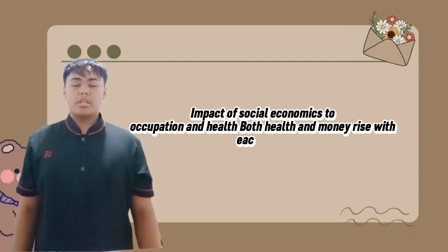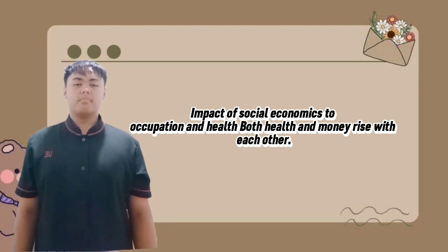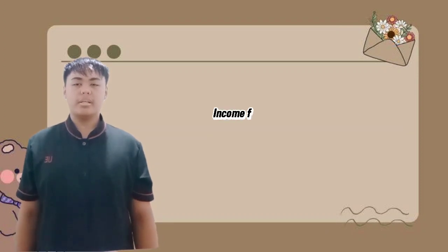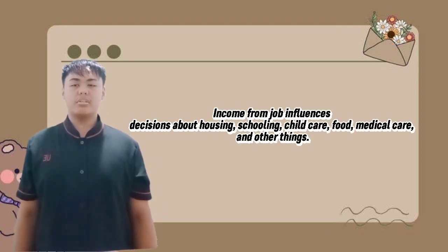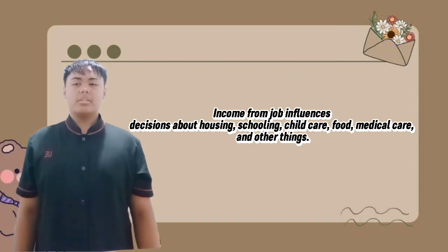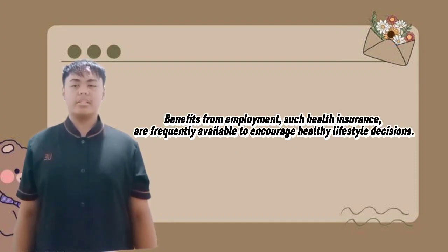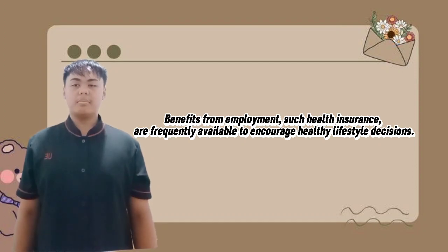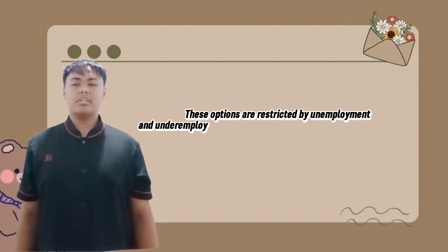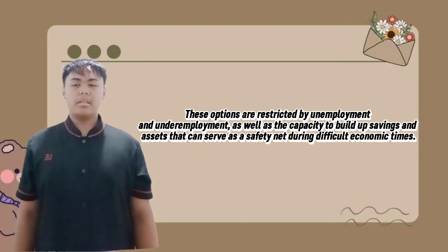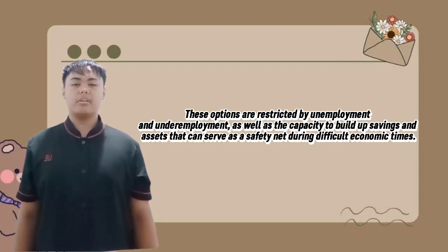The impact of social economics on occupation and health. Both health and money rise with each other. Income from a job influences decisions about housing, schooling, childcare, food, medical care, and other things that benefit from employment. Health insurance is frequently available to encourage healthy lifestyle decisions. These options are restricted by unemployment and under-employment, as well as the capacity to build up savings and assets that can serve as a safety net during difficult economic times.